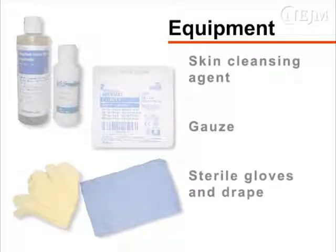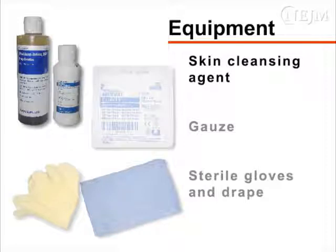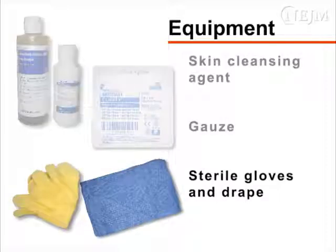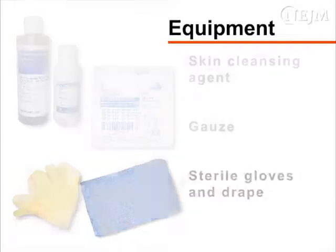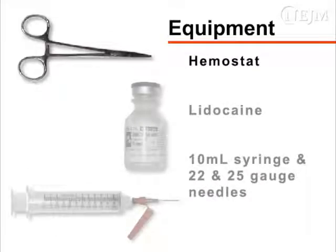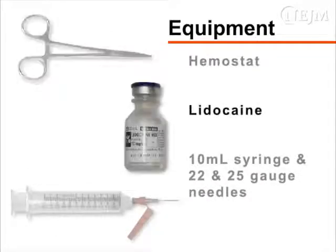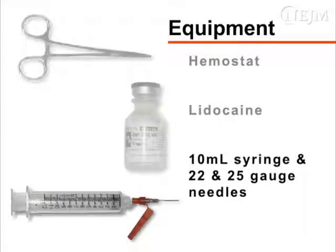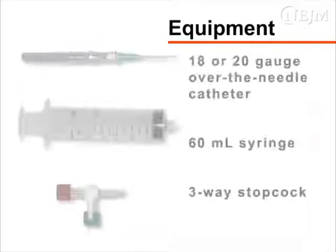For sterile preparation of the site and administration of anesthesia, you will need a skin cleansing agent, sterile gauze, sterile gloves, a sterile drape, a hemostat (which is optional), 1 or 2% lidocaine, and a 10 milliliter syringe with a 22 to 25 gauge needle.